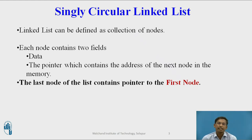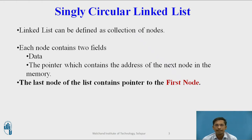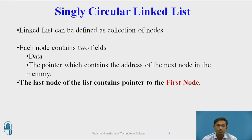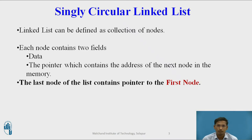In a singly circular linked list, the last node's next part holds the address of the start variable. Start is a global variable that stores the address of the first node — start always points to the first node.